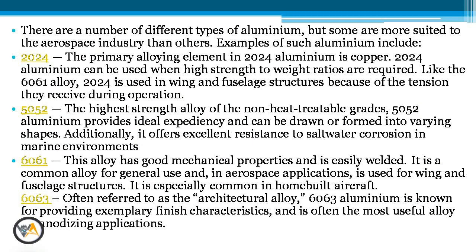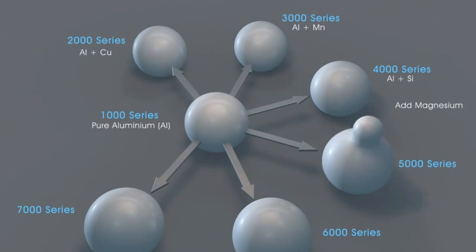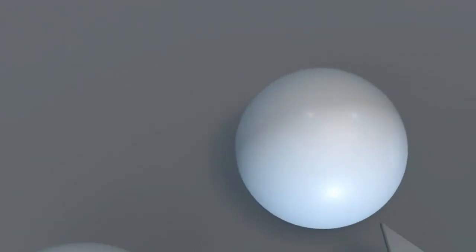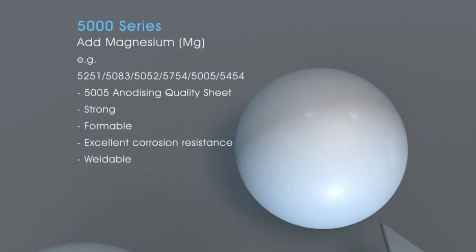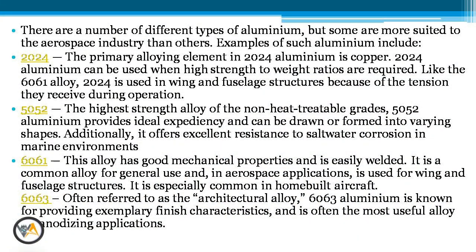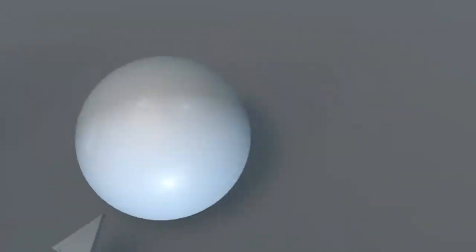2024 is used in wing and fuselage structures because of the tension they receive during operation. 5052 is the highest strength alloy of the non-heat-treatable grades. 5052 aluminium provides ideal efficiency and can be drawn or formed into various shapes accordingly.